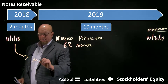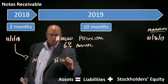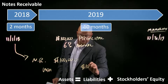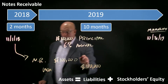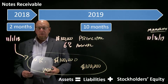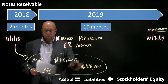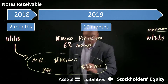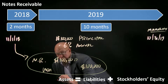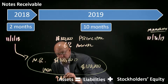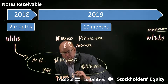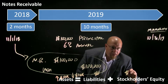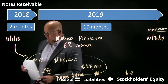On November 1, the journal entry is: debit notes receivable $100,000, credit cash $100,000 — because we are the lender. Looking at the fundamental accounting equation, assets go up by $100,000 but also go down by $100,000. Nothing happens with liabilities or stockholders' equity. The initial loan simply trades one asset for another.